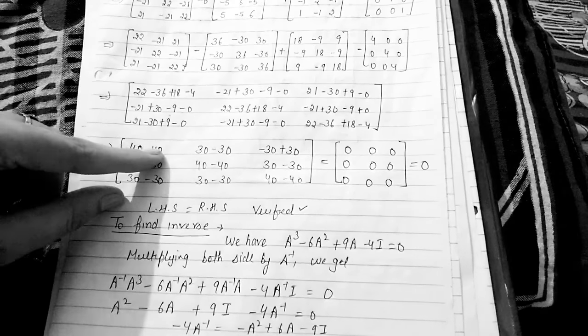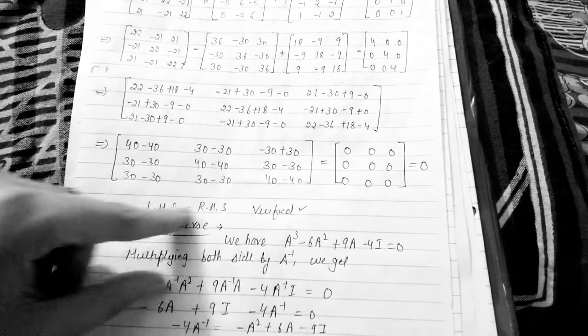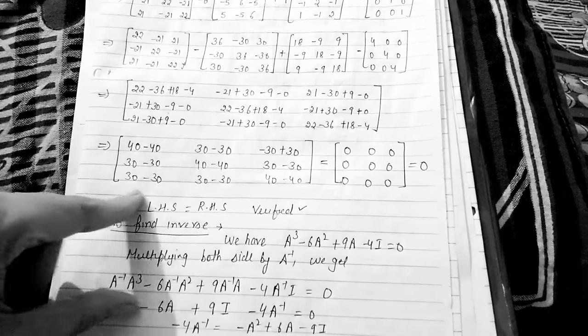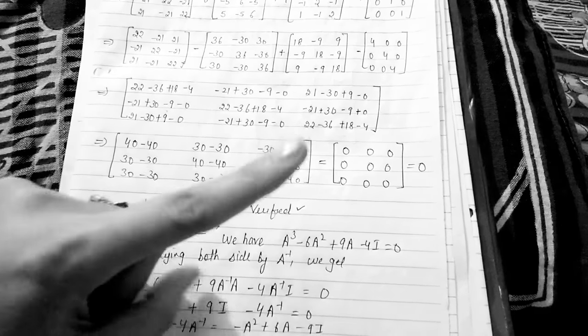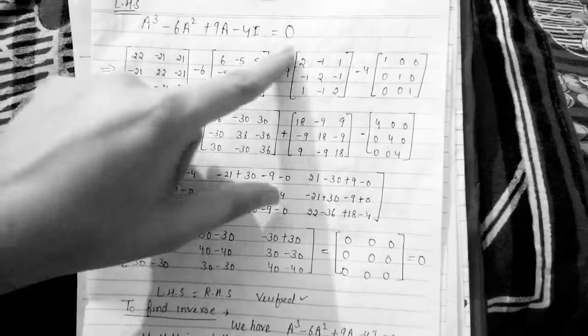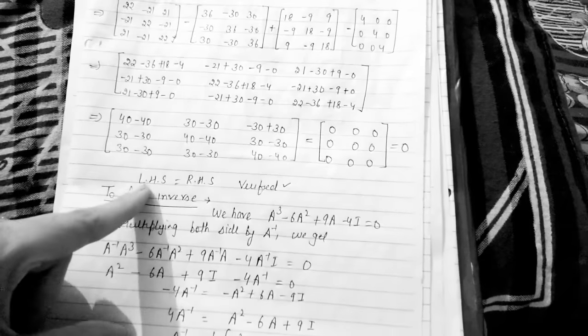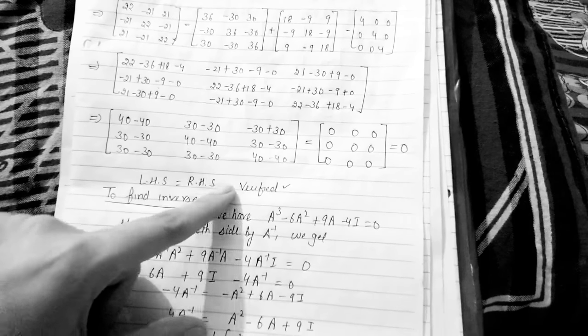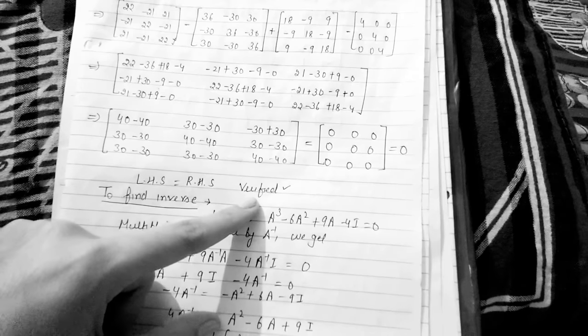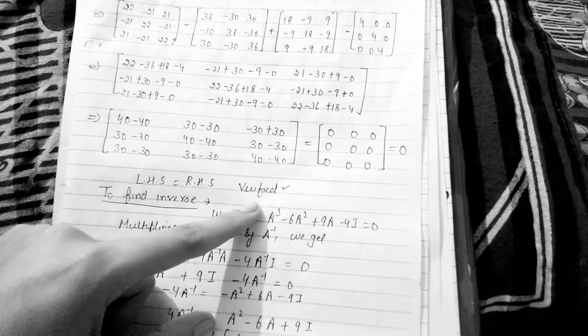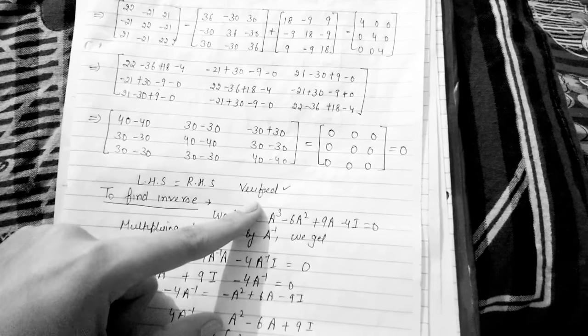Simplifying element by element — first row, first element; first row, second element; and so on — we can see that each element cancels out: 40 - 40, 30 - 30, -30 + 30, and so on. The result is the zero matrix, which equals the right-hand side (zero). So LHS = RHS, and the Cayley-Hamilton theorem is verified for the given matrix A.